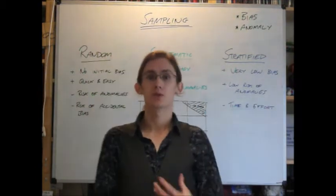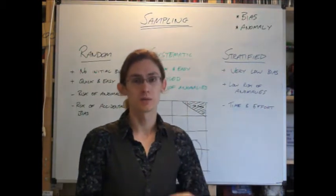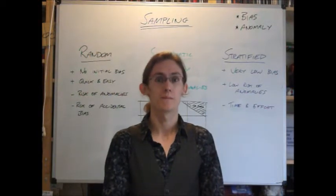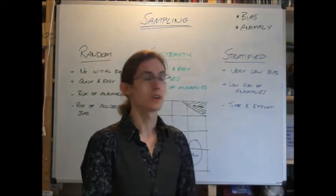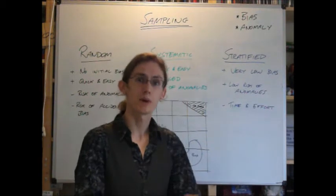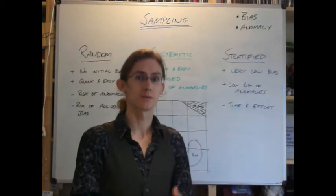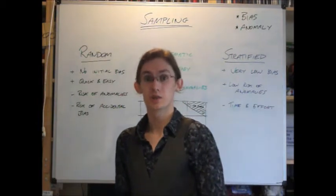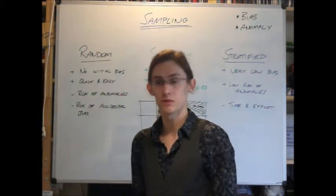An anomaly is a result that doesn't fit the pattern, something that is just wildly out to the edge somewhere. When we try to avoid anomalies, we try to avoid bias, because that way we get what's called a representative sample. You may have come across sampling in other subjects, but in geography this is how we refer to it.